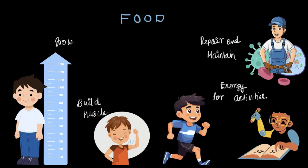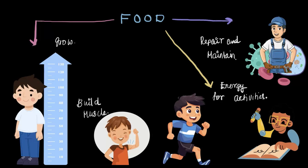Our body has different requirements, and these different requirements are met by different components of the food. Some components help the body grow, some provide energy, some repair and maintain the body, and some are responsible for muscle building.